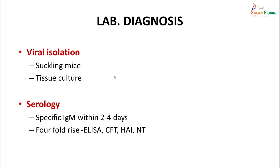One can either do viral isolation, which is done in suckling mice or tissue culture, or one could look for antibody formation — specific IgM within the first few days. For IgG detection, one needs to show a four-fold rise of antibody, detected by ELISA, CFT, HAI, or neutralization test.